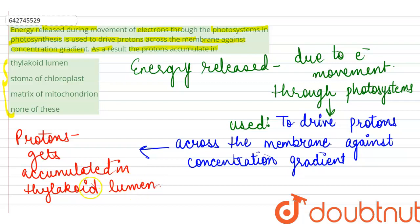So the protons get accumulated in the thylakoid lumen, and inside the thylakoid lumen. And thus this thylakoid lumen performs an important role for photophosphorylation during photosynthesis.